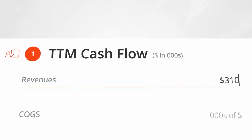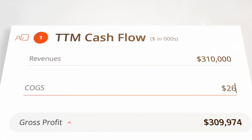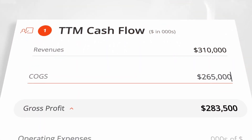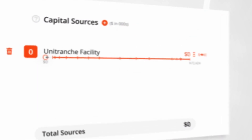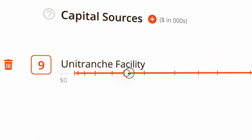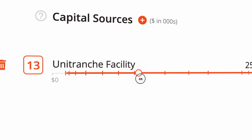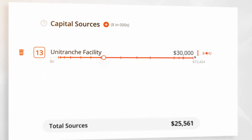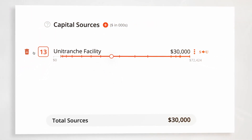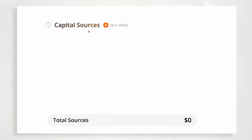Begin by selecting new transaction, then enter your high-level financial data. Structure your deal by selecting the type of capital desired. Users can experiment with different capital structures to see how many banks and direct lenders are available for each type and the amounts they are willing to lend.